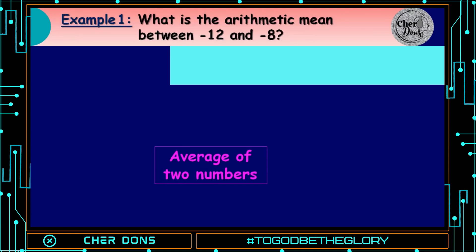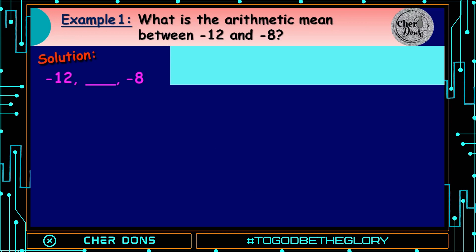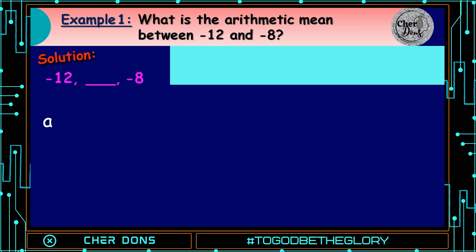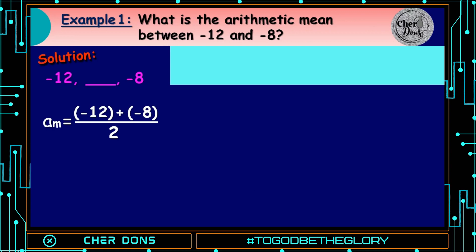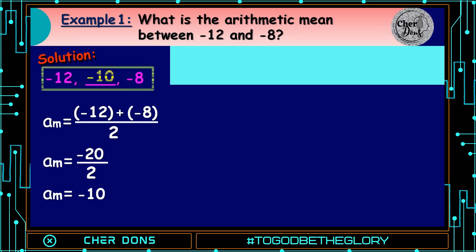Example number 1: What is the arithmetic mean between negative 12 and negative 8? Given: we have negative 12, blank, and negative 8. We're going to get the average of the two numbers, that is negative 12 plus negative 8, all over 2. It is equal to negative 20 divided by 2, which gives negative 10. So the terms are negative 12, negative 10, and negative 8.